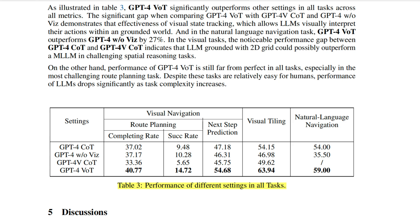Now let's examine the performance outcomes. The bolded figures highlight where the performance was strongest. Initially, in route planning, GPT-4 with visualization of thought had the highest completion rate, outperforming the others. For the success rate, GPT-4 with vote was significantly superior, nearly 50% better than its nearest competitor. Looking at next-step prediction, visual tiling, and natural language navigation, the visualization of thought prompting technique consistently outperforms the others. It's quite remarkable. This clearly indicates that different prompting techniques can significantly impact the outcome.